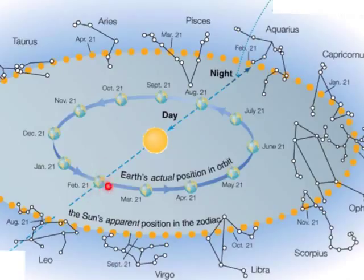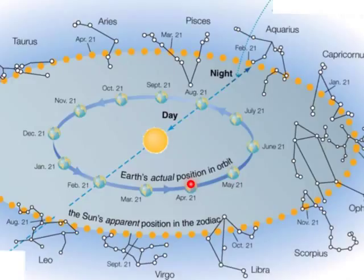For instance, here's the Earth in February, and the sun appears to be in Aquarius. Let's do another one — let's pick on Aries. Here the Earth is in April, and the sun appears to be in Aries.